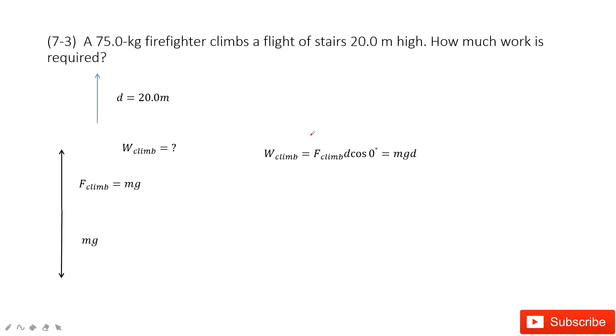Welcome to my channel. I am Zhang Jingxu. Let's look at the third problem in chapter 7, work and energy. It tells us we have a firefighter with a given mass, and the distance of movement is given by the displacement upward, 20 meters. It asks for how much work is required.